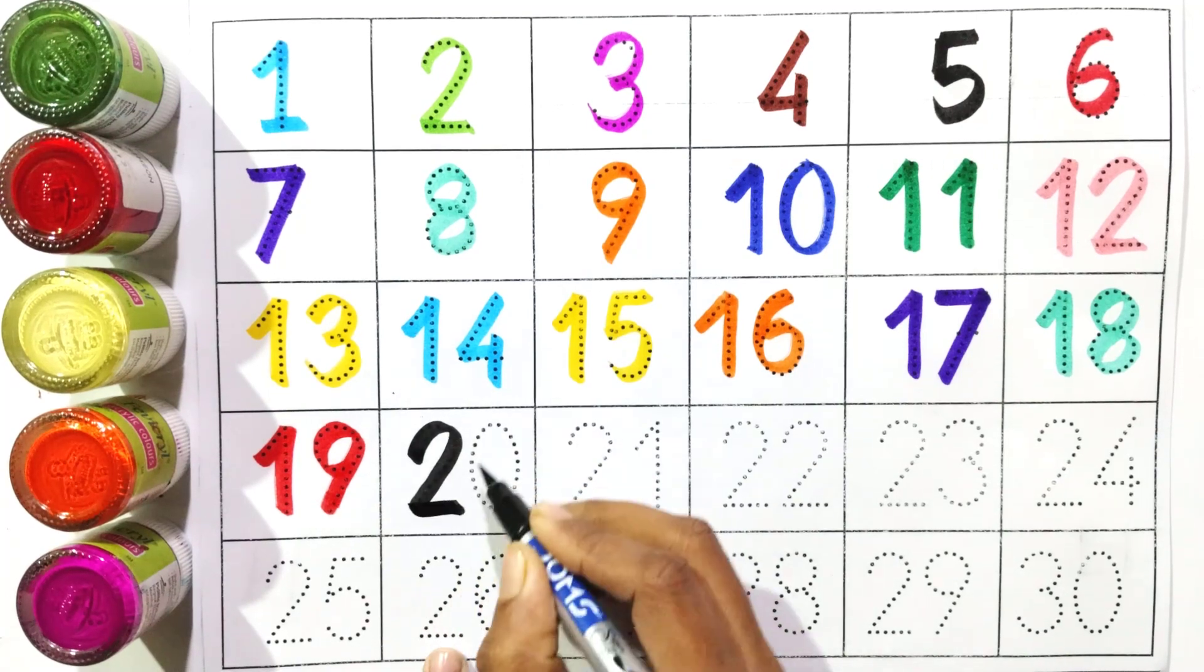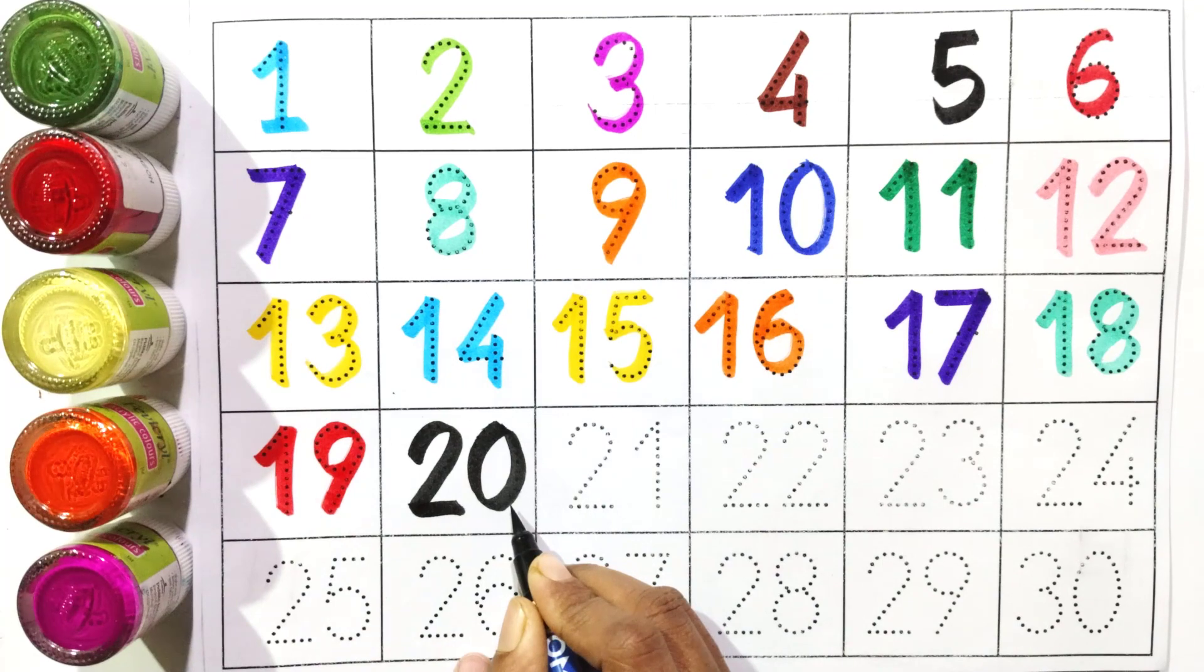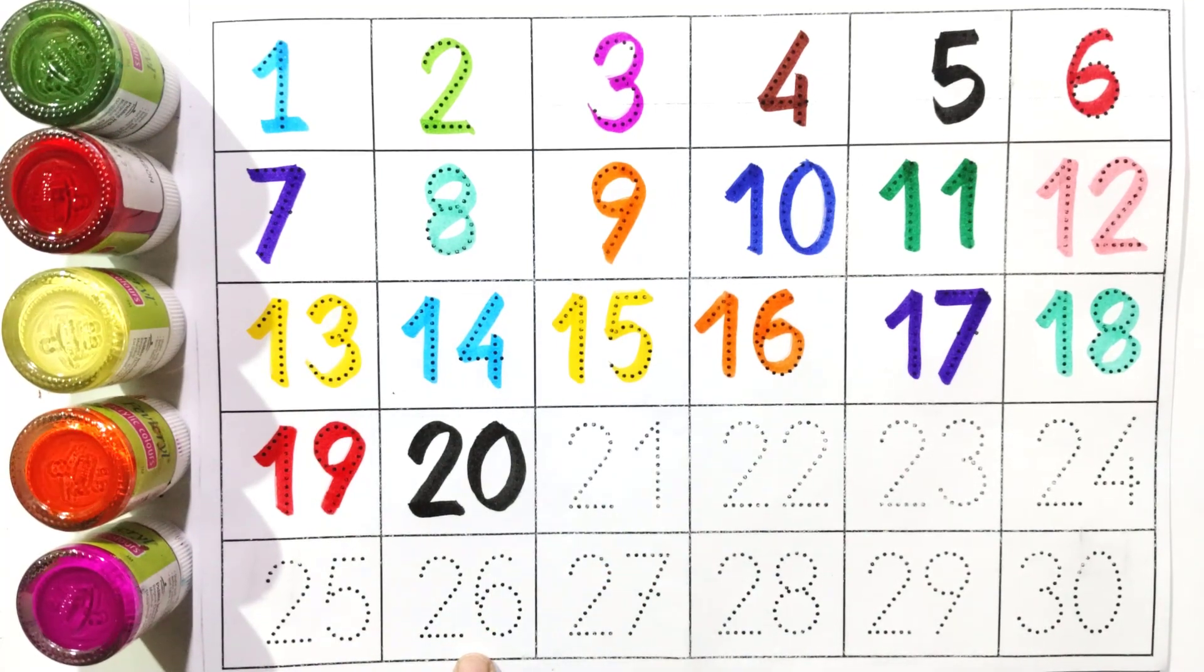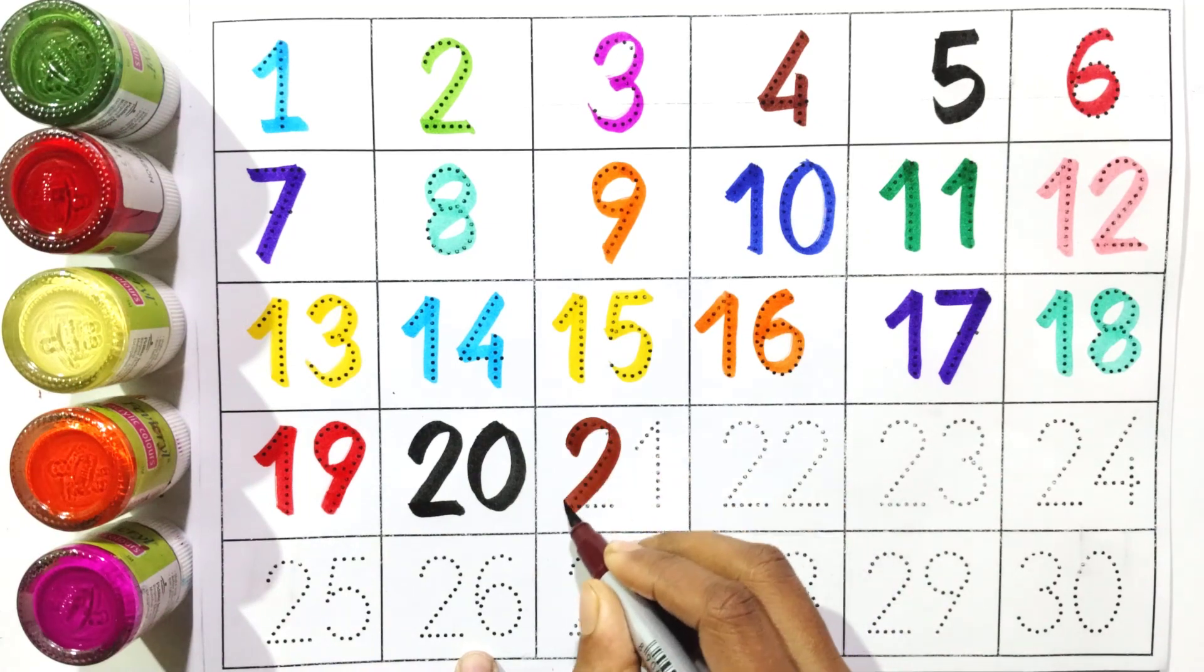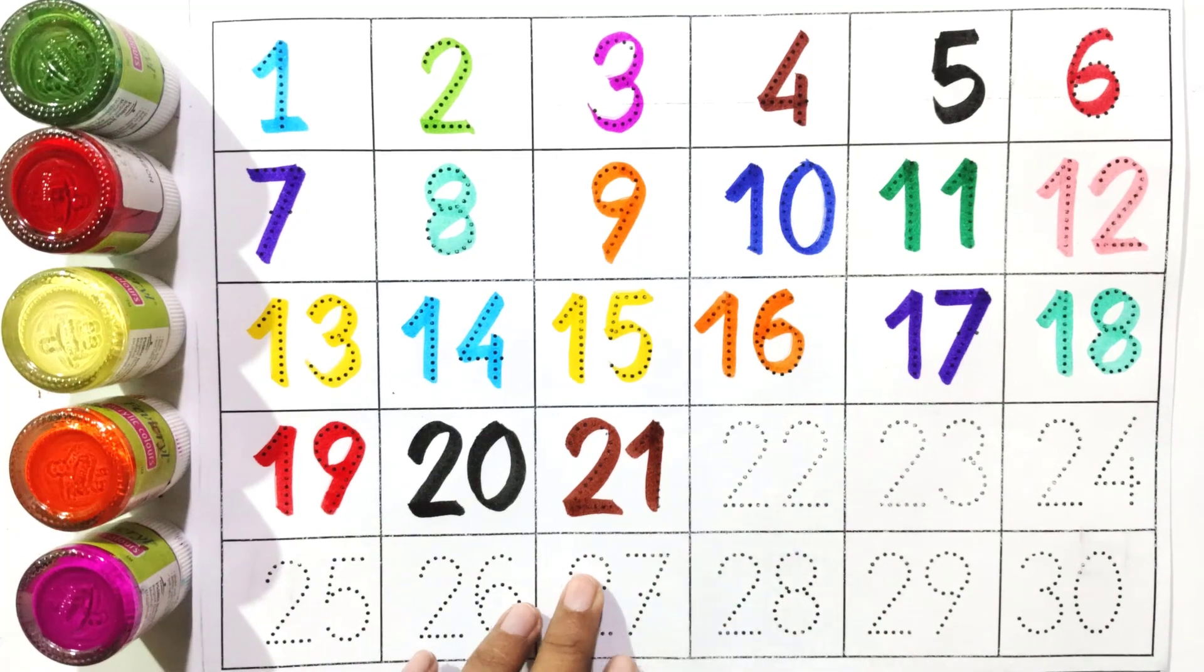Two and zero: twenty. Say with me: twenty. Two and one: twenty-one.